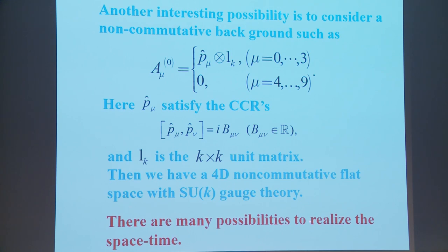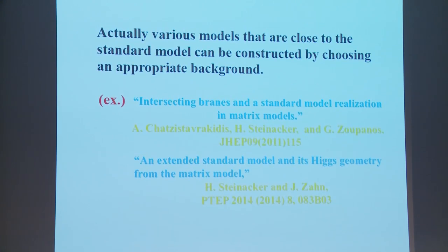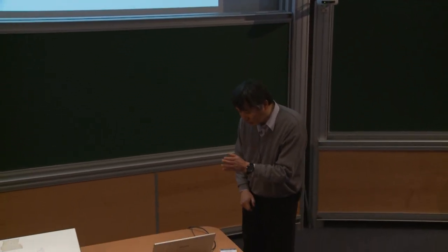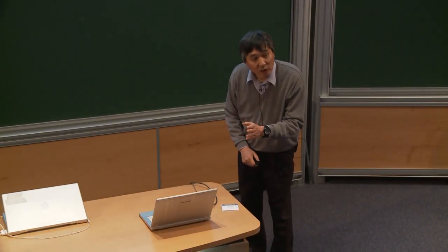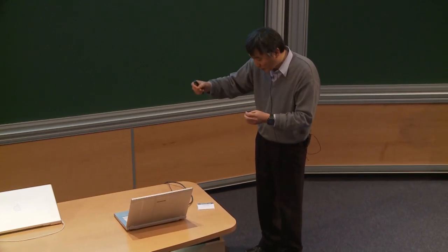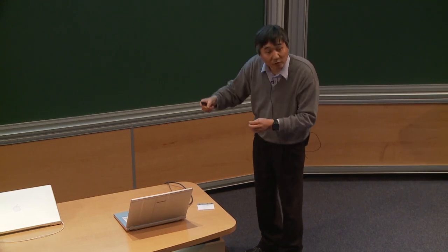There are many possibilities to realize the space-time. Various models close to the standard model can be constructed by choosing an appropriate background. Including Harald, these people did nice work along this direction. The fermions are never given a background value, but we still have to keep the fermionic zero modes. After integrating the fermionic zero modes, we have very non-trivial interactions between eigenvalues, which is why we have such rich space-time from the matrix model.